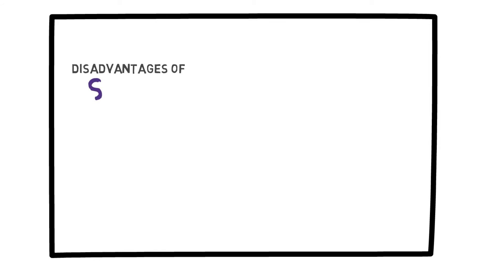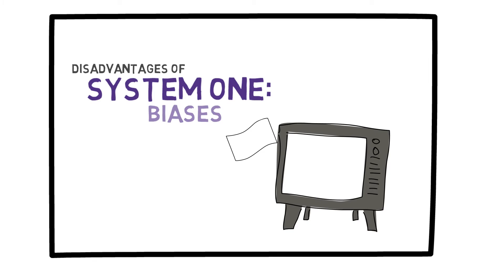Although useful, System 1 does come with its own set of flaws. In particular, it suffers from some biases. As an example, the anchoring bias is a well-known one. Let's say you go to the store and you see an item that costs $100. Now imagine the exact same scenario, the exact same store, and the exact same item, but the only difference now is that the item was originally listed at $200, but now is on sale for $100.